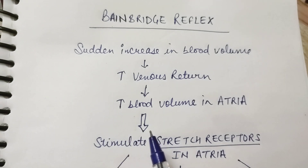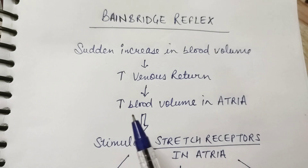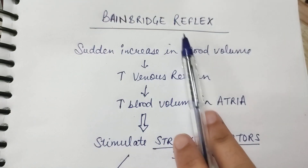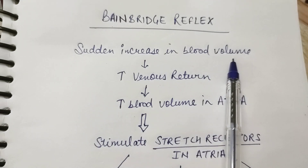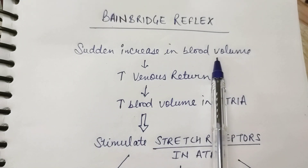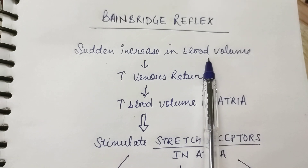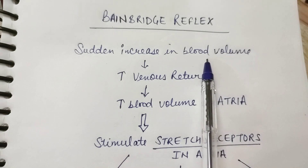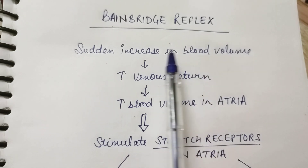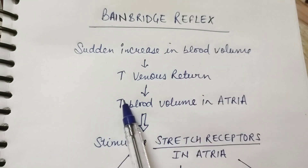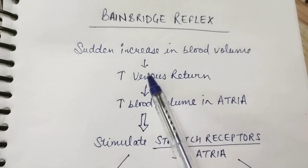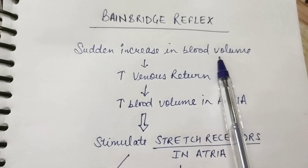Hi everyone, welcome to my channel. In this video we'll be talking about a small reflex of the cardiovascular system which is the Bainbridge reflex. Basically, whenever there is a sudden increase in blood volume — for example when we infuse IV fluid to a patient and suddenly rush the fluid — there can be a sudden increase in blood volume, which can trigger this reflex.